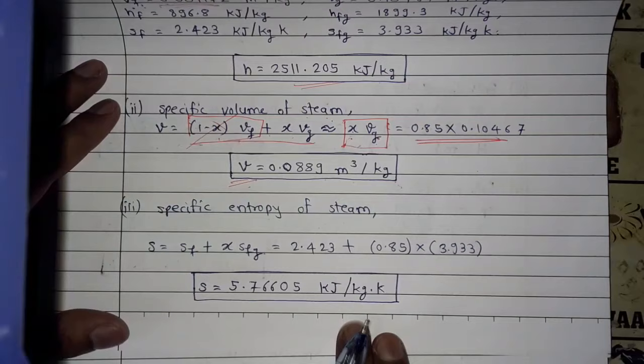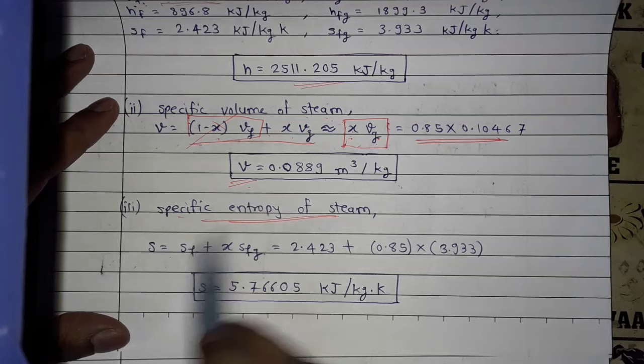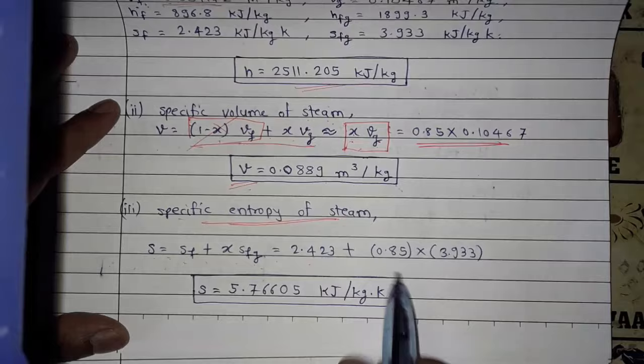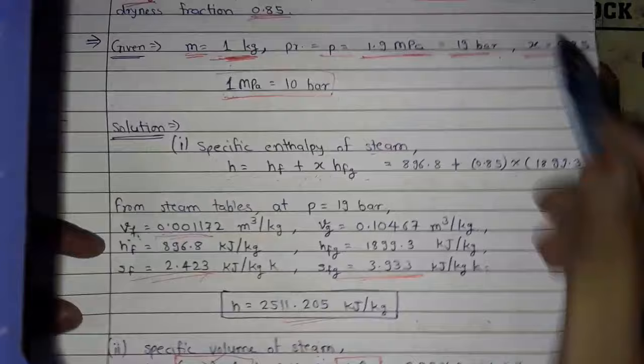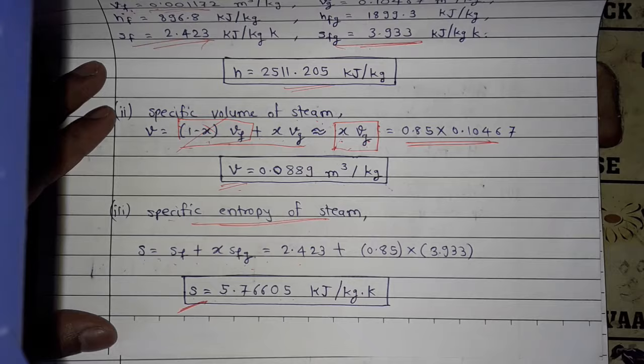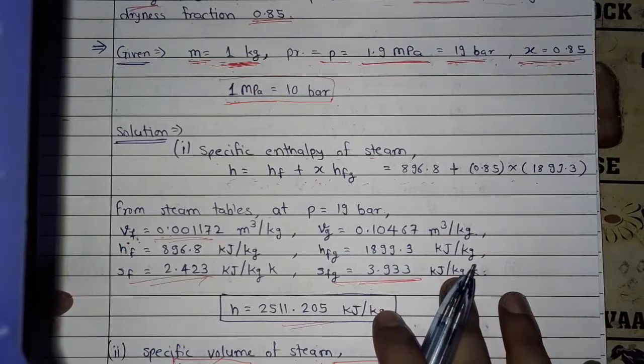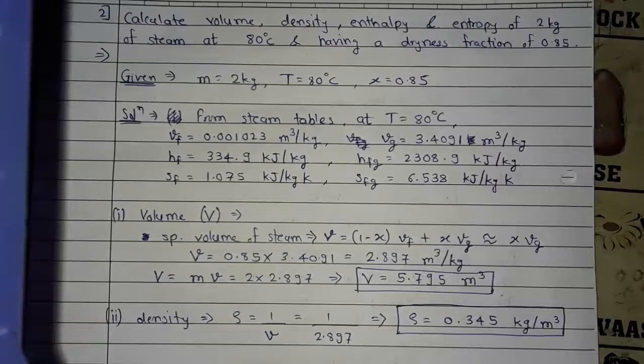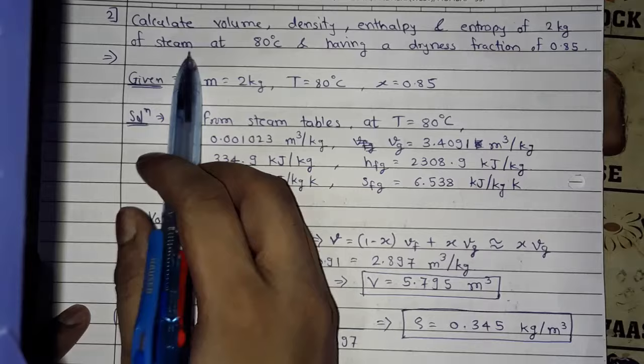Now, specific entropy of steam. The formula is: s = sf + x·sfg. Putting in the values of sf and sfg and the dryness fraction, and solving, we get s = 5.76605 kJ/kg·K. This completes Problem 1, showing how to use the pressure steam table.